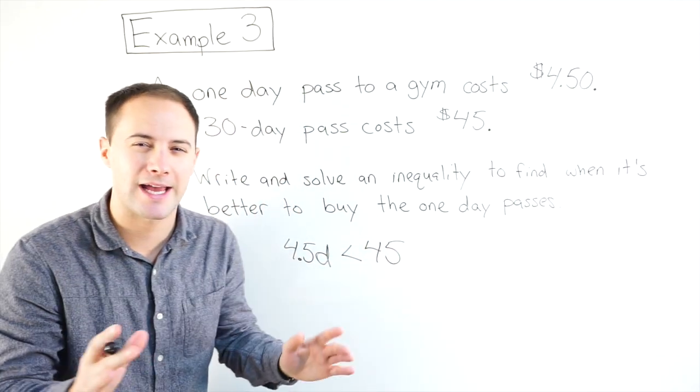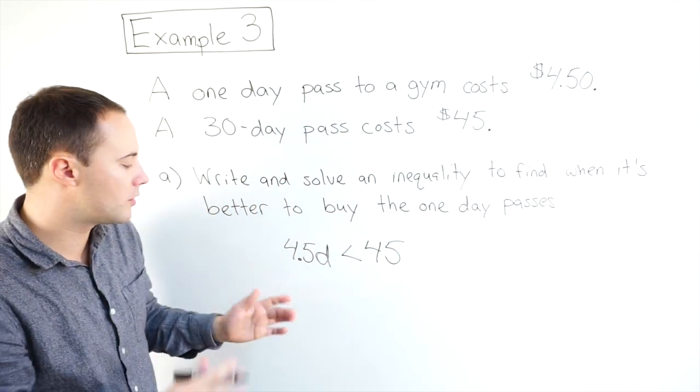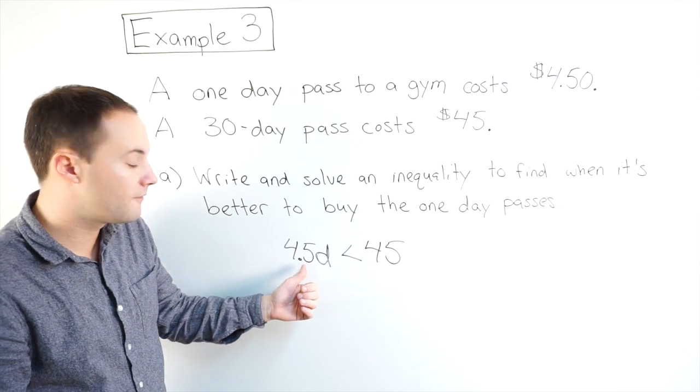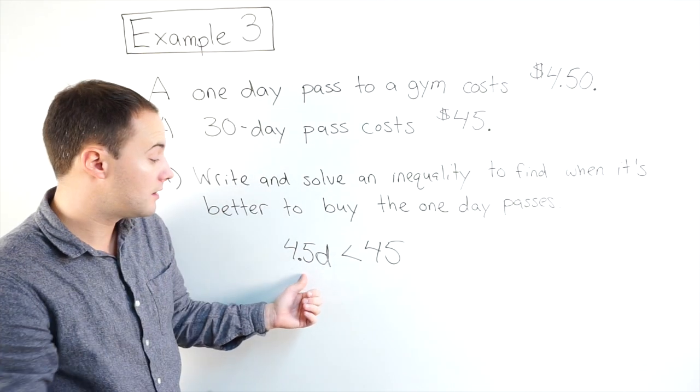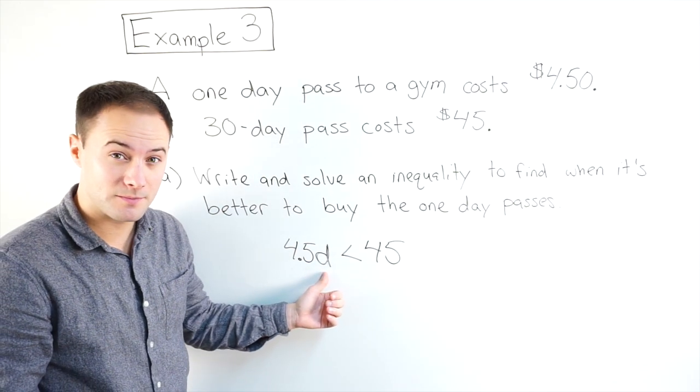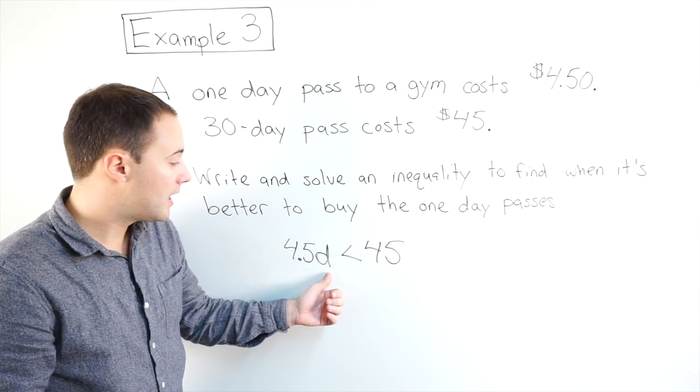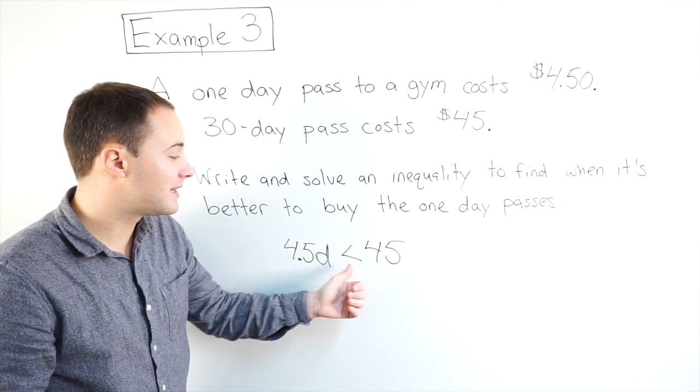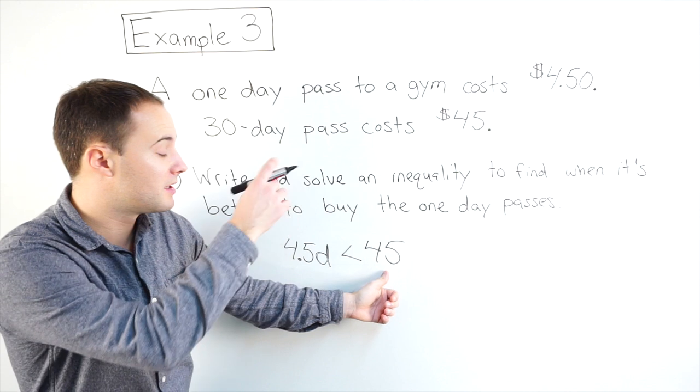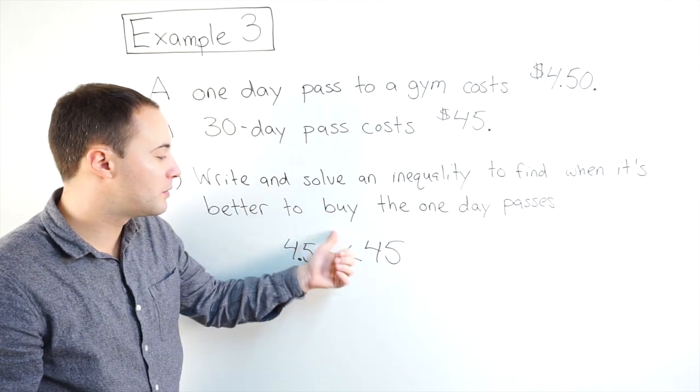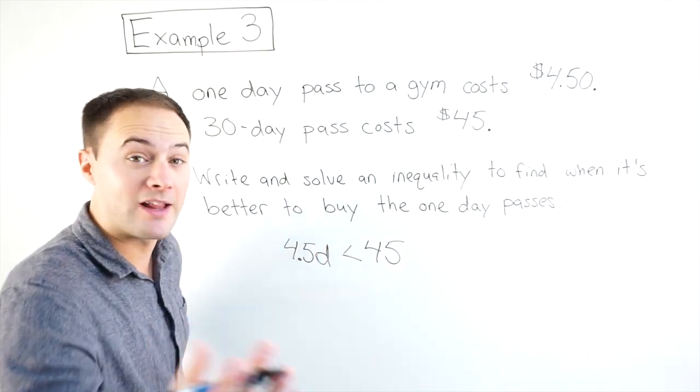So take a second and just look at that and think about what we wrote. So what we're saying is $4.50 times the number of days is less than $45, which is the month long pass. If that's less than $45, this would be the better deal.